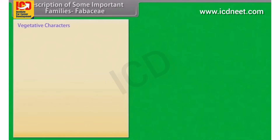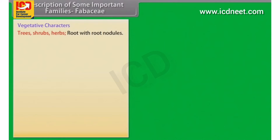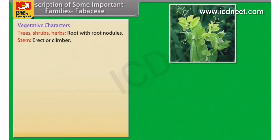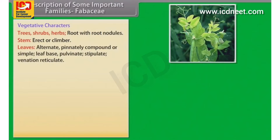Vegetative characters of Fabaceae: Plants are trees, shrubs or herbs, with roots bearing root nodules. Stem is erect or a climber. Leaves are alternate, pinnately compound or simple, with a pulvinate leaf base, stipulate, and venation reticulate.